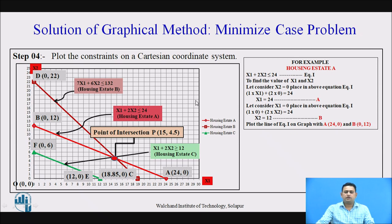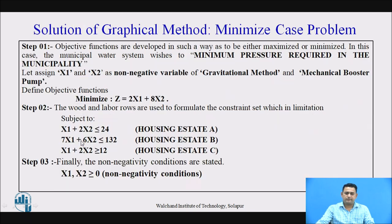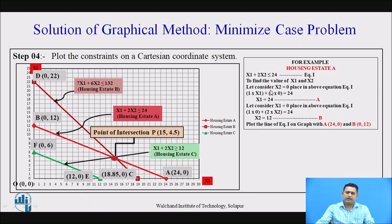This is a plot of the particular problem using the graphical method. There are three lines highlighting the three constraints for housing states A, B, and C. Each state has a restriction on pressure. For housing state A, the pressure should not exceed 24 kN/m²; for housing state B, it should not be more than 132 kN/m²; and for state C, it should not be less than 12 kN/m². The inequality equations are converted to equality to obtain the values of x1 and x2, and then these lines are plotted.